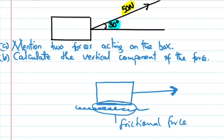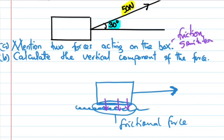Gravitation is a force which pulls an object downwards. So one of the forces is the gravitational force, another is the frictional force, and there is also the normal force. Those are the forces. Now take question number B.